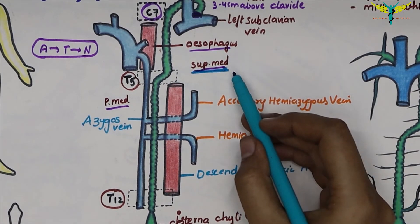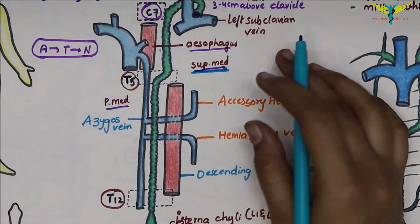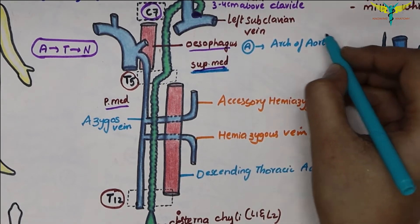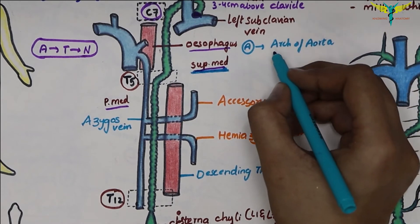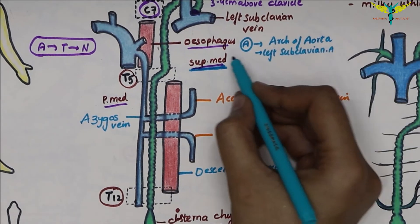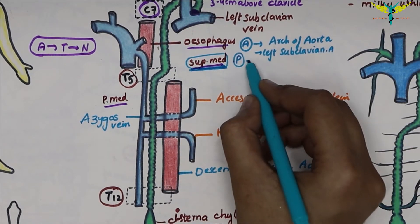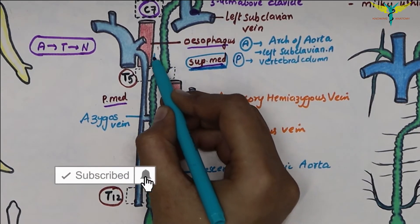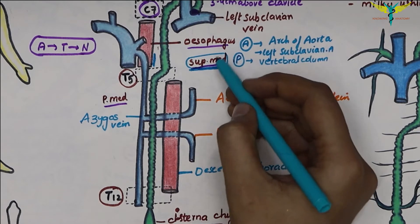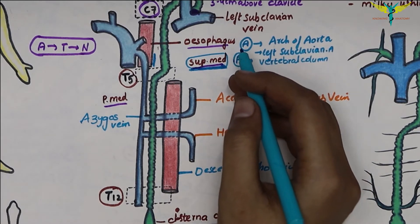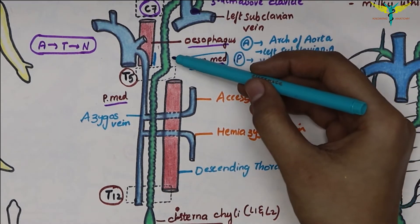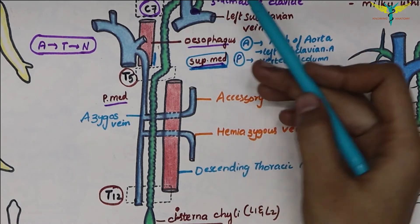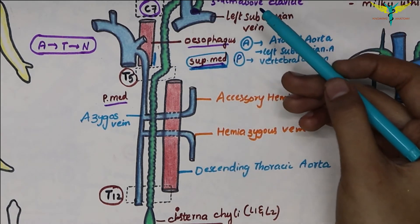In the superior mediastinum, the anterior relations are the arch of the aorta and the commencement of the left subclavian artery. The posterior relation is the vertebral column. To the right side is the edge of the esophagus, and towards the left side is the left lung and pleura. The thoracic duct then enters the root of the neck.